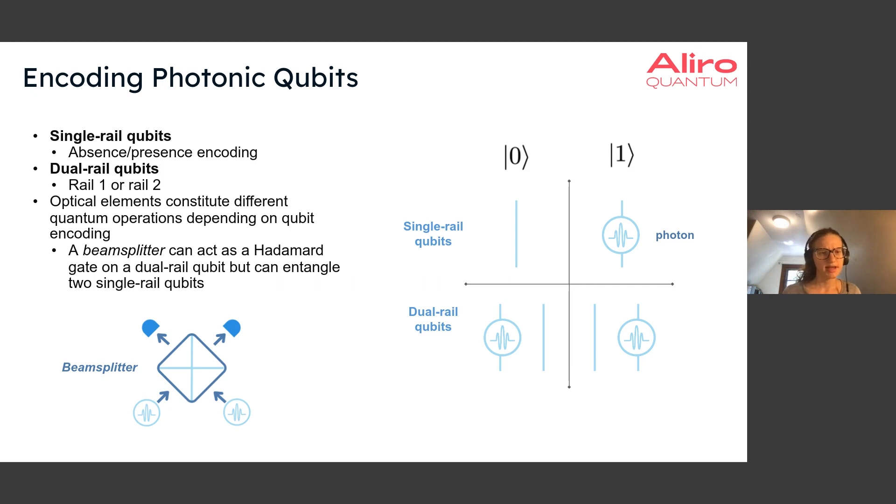An important thing to note is that optical elements will constitute different quantum operations depending on the type of qubit encoding that you're using. For instance, a beam splitter, which is a commonly used optical element, will act as a Hadamard gate, which is an operator that acts on a single qubit and has a well-defined operation on a single qubit. Beam splitter acts as a Hadamard gate on a dual rail qubit, but can actually entangle two single rail qubits and particularly can be used to entangle stationary qubits if stationary qubits are entangled with two single rail qubits.